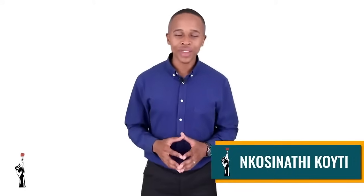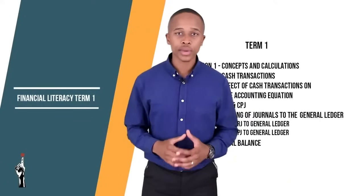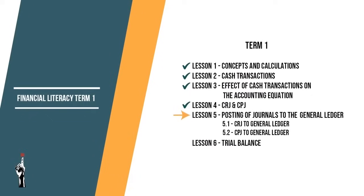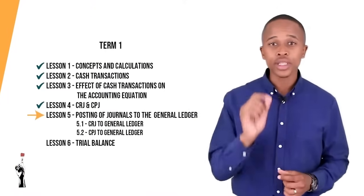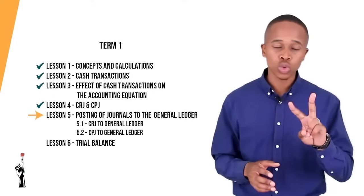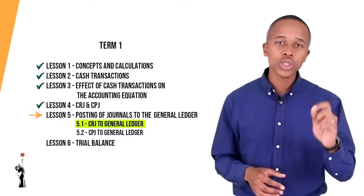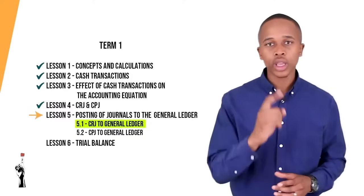Good day Grade 9 learners and welcome to Tumamina Teaching. You are tuned into your fifth lesson of Grade 9 EMS. In the last lesson, lesson 4, we looked at the CPJ and the CRJ of a trading business. In this lesson, lesson 5, we'll be looking at how you post the CRJ and the CPJ on the general ledger. Because this lesson is a bit long, we'll split it into two: lesson 5.1 will focus on posting the CRJ on the general ledger.